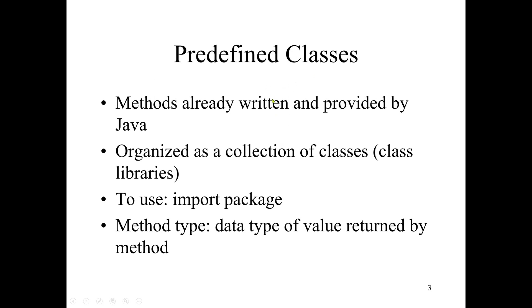These classes consist of methods — methods already written and provided by Java, organized as a collection of classes or class libraries. For example, we have the utility package class, which we used in previous lectures when we want to input data. The utility package consists of a class named Scanner, so with the Scanner class we can get input from a user. The same applies to System.out.println — this is a System class with a print method, and it normally consists in a package called java.lang. The java.lang package we don't need to import — it's automatically imported for us.